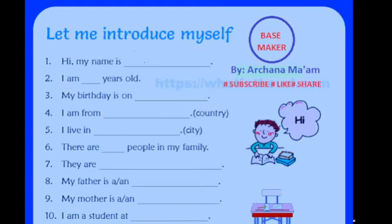Now the next line is 'I am from...' — you have to say about your country. For example, 'I am from India.' Then 'I live in...' — if you live in Sahaja, you will say 'I live in Sahaja.' If you live in Patna, you will say 'I live in Patna.' Whatever place you live in, you will add that.